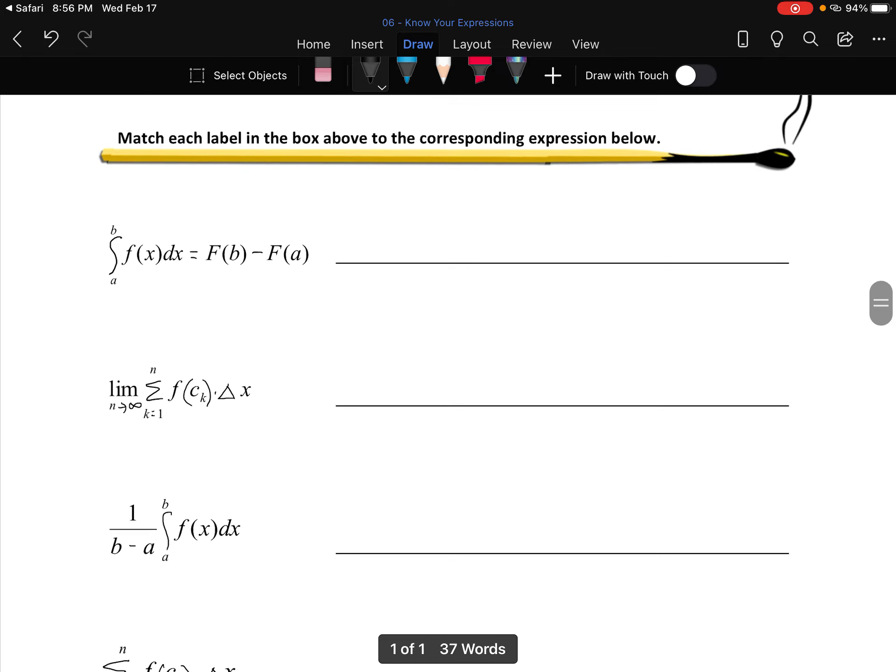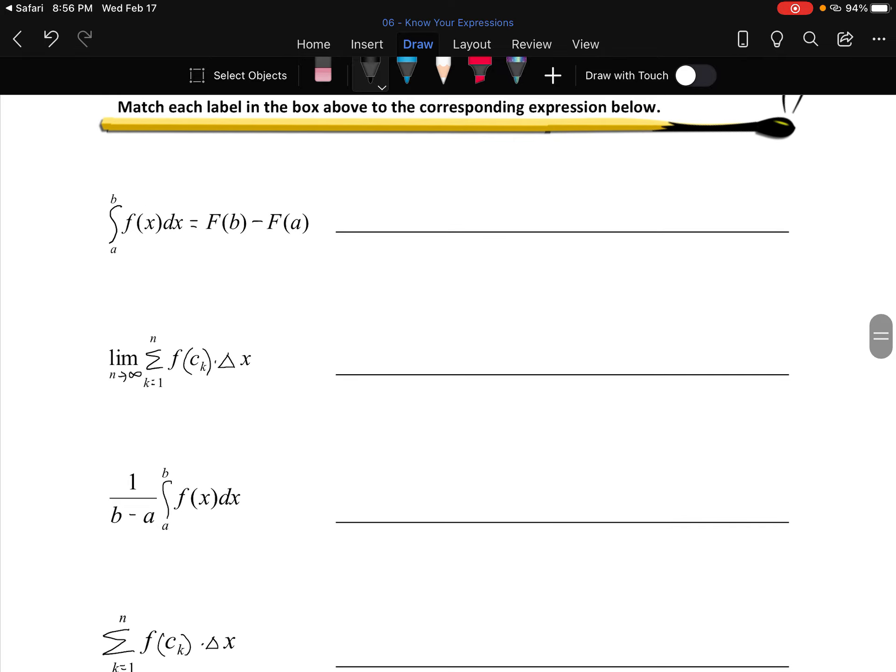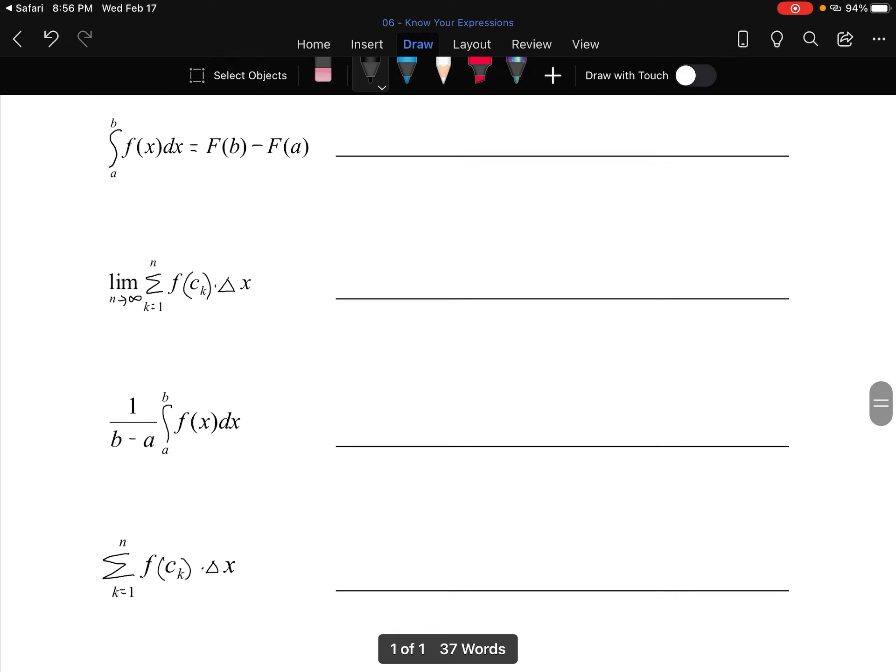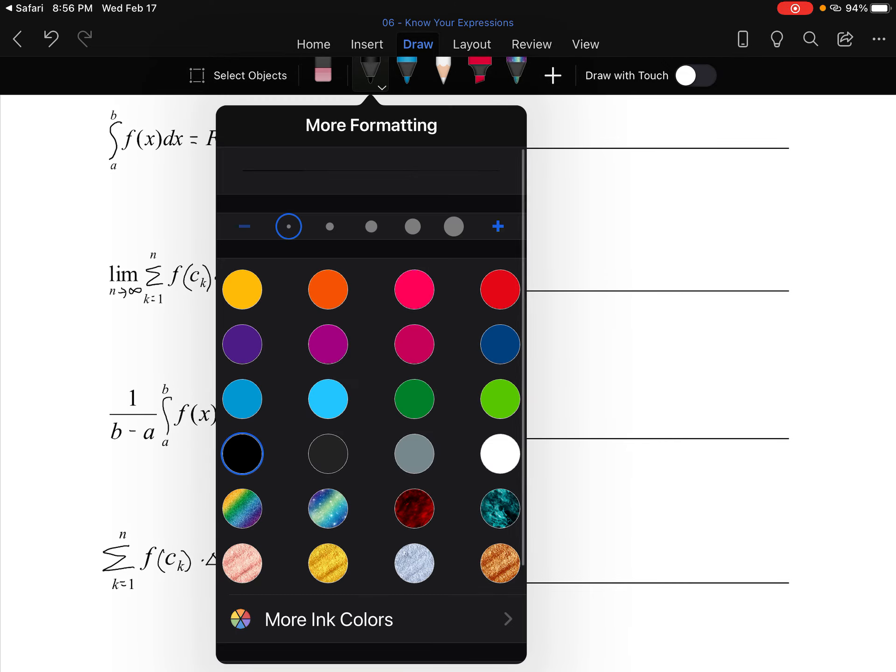For me, the easiest one to recognize is the average value because it's got that one over b minus a out there, so it's summing up the whole thing.